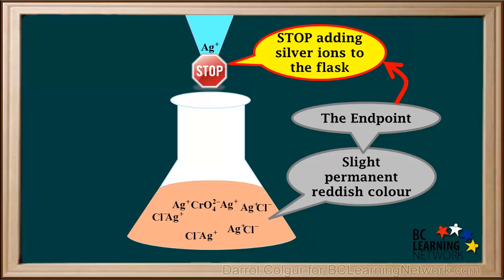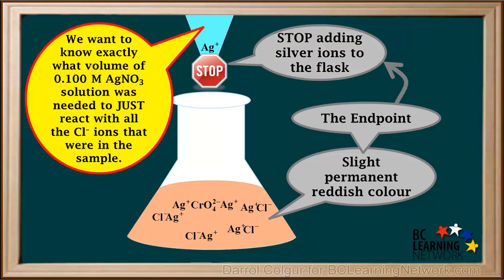Once we reach the endpoint, we must stop adding silver ions to the beaker. This is because we want to know exactly what volume of 0.1 molar AgNO3 solution was needed to just react with all of the chloride ions that were in the sample.